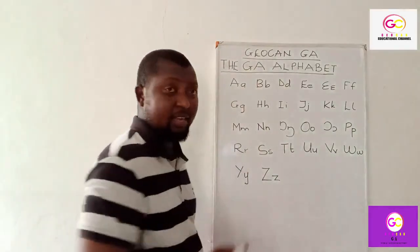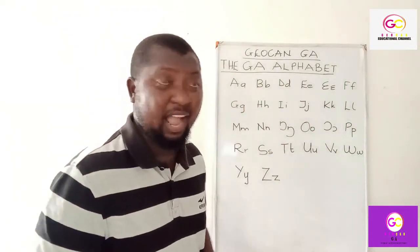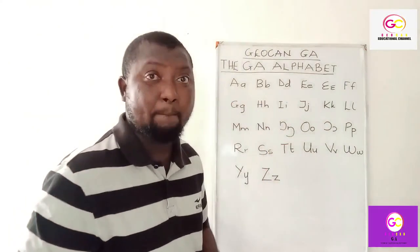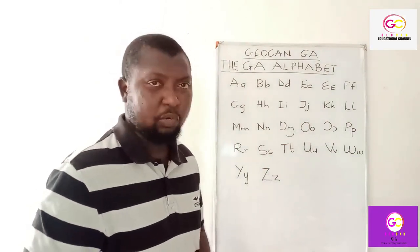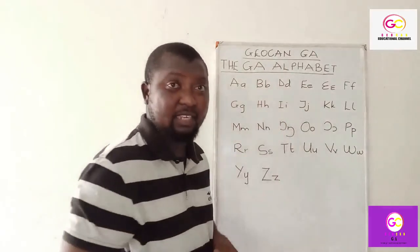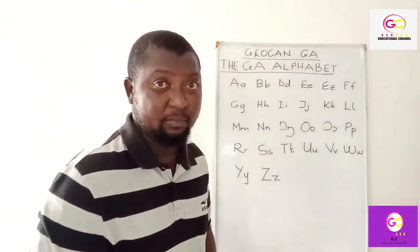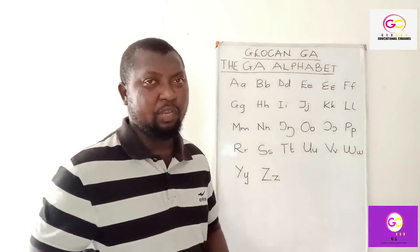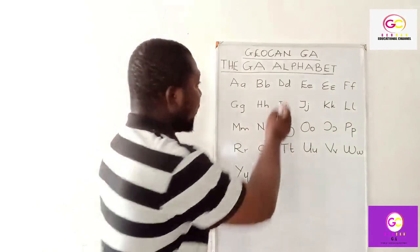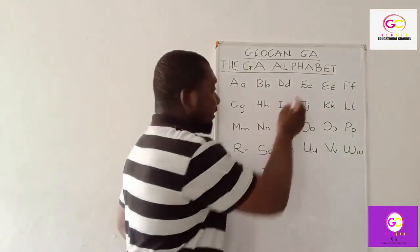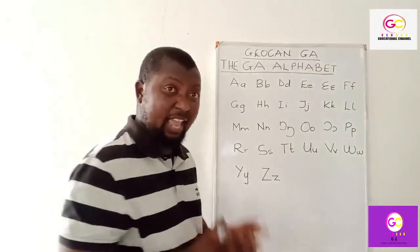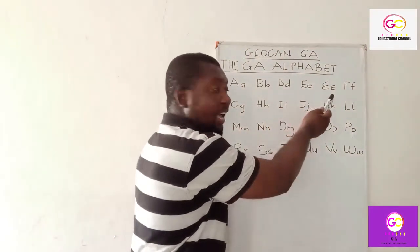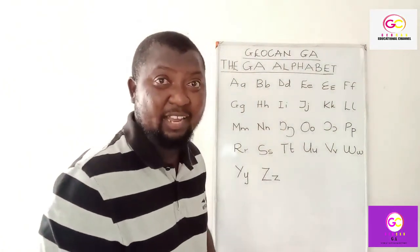So with 'A' in Gun, it sounds 'ah' — say 'ah.' Good. With 'B' it sounds 'buh' — say 'buh.' Good. With 'D' it sounds 'd.' With the next letter it sounds 'eh' — say 'eh.' Good. With this one it also sounds 'eh' — repeat it again: 'eh.' Good.